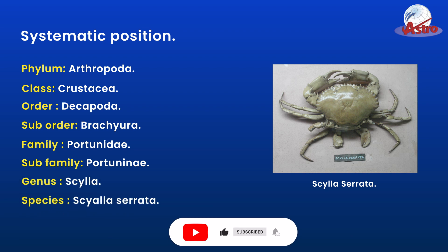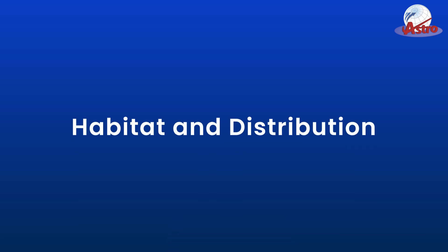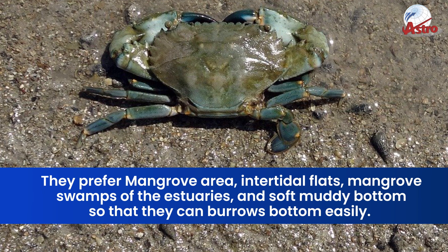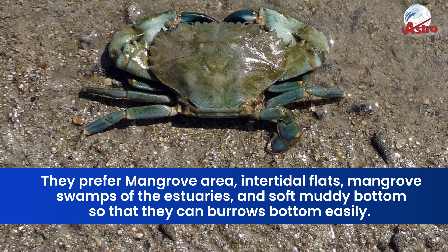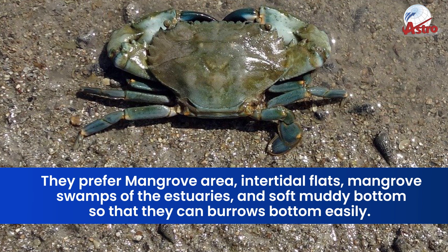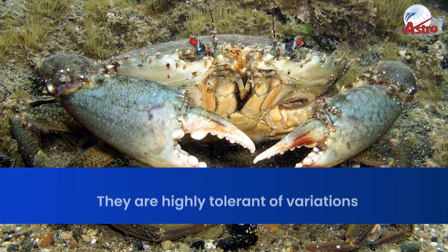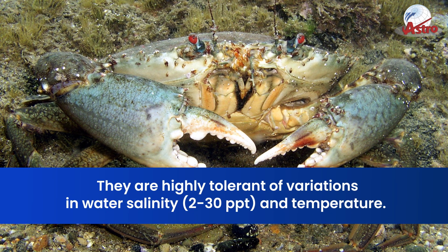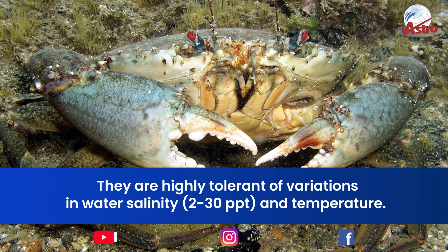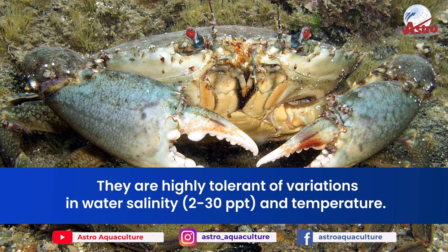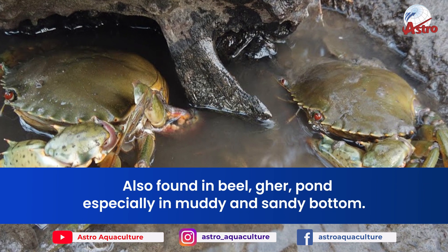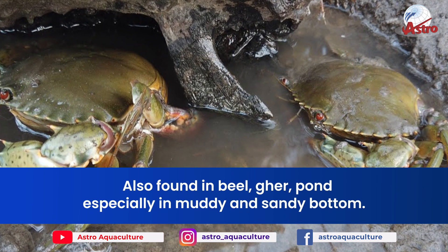Mud crabs prefer mangrove areas, intertidal flats, mangrove swamps of the estuaries, and soft muddy bottoms so that they can burrow easily. They are highly tolerant of variations in water salinity — 2 to 30 ppt — and temperature. They are also found in bee-gher ponds, especially those with muddy and sandy bottoms.